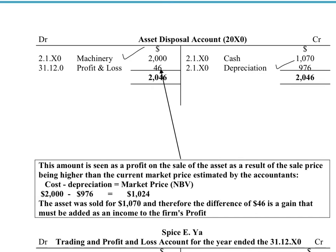Now we need to look at whether we actually gained or lost from the sale. We sold the asset for $1,070, so we credit our asset disposal account and debit our cash account, as the money goes into the cash T-account. Did we make money? The machine originally cost $2,000, we estimated it would lose $976 in value, so it should be worth $1,024. But we sold it for $1,070, so we actually gained $46.